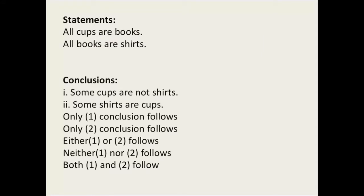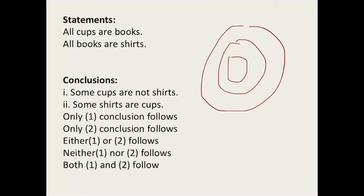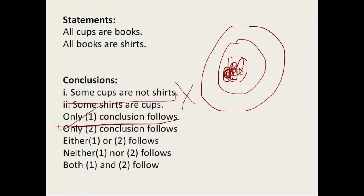Next syllogism: all cups are books, all books are shirts. Draw an overlapping diagram — cups inside books, books inside shirts, giving a fully overlapping set. When you get an overlapping diagram, make sure 'not' statements are always wrong. 'Some shirts are cups' — yes, because cups fall within shirts in the diagram. The statement with 'not' does not follow. Therefore, only one conclusion follows — 'some shirts are cups' — and only one follows is the right answer.